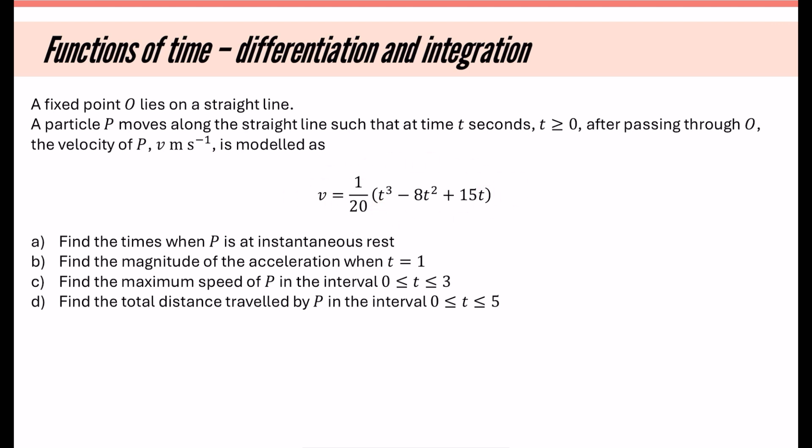The first thing we're going to do is find the times when it is at instantaneous rest. We're just going to translate what it means to be at rest—that means the velocity is zero. So we're saying v = 0. In other words, 0 = 1/20(t³ - 8t² + 15t).